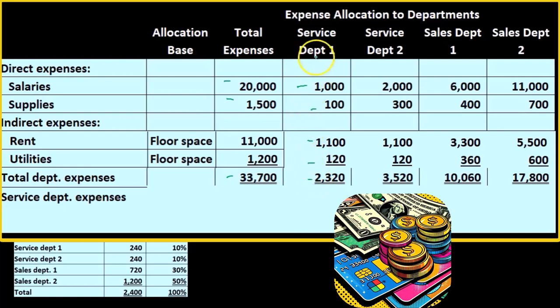Now we've basically completed these two service departments. We have allocated the expenses to them that we need to, including both the direct and indirect expenses. There are no revenues related to these service departments.